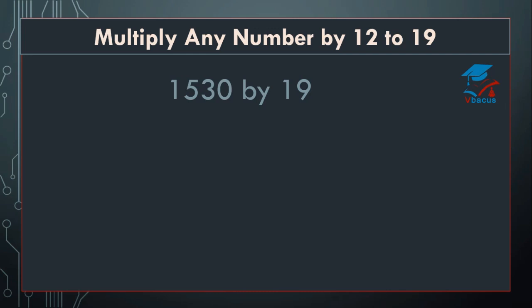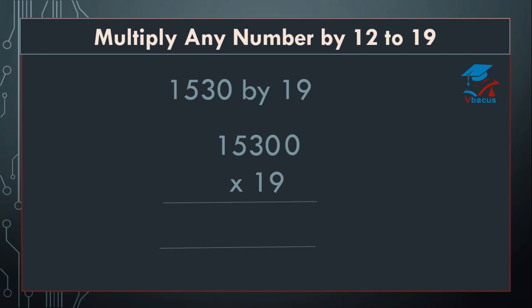Let us go to the next sum: multiply 1530 by 19. Same method — insert a 0 on the right hand side and a 0 on the left hand side. Start multiplying by 9. 9 zeros are 0, plus 0 is 0. Cut 0. 9 threes are 27 plus 0 equals 27. Write 7, 2 will be carried over. 9 fives are 45 plus 3 equals 48. Write 8, 4 will be carried over. 9 ones are 9 plus 5 equals 14. Write 4, 1 will be carried over.